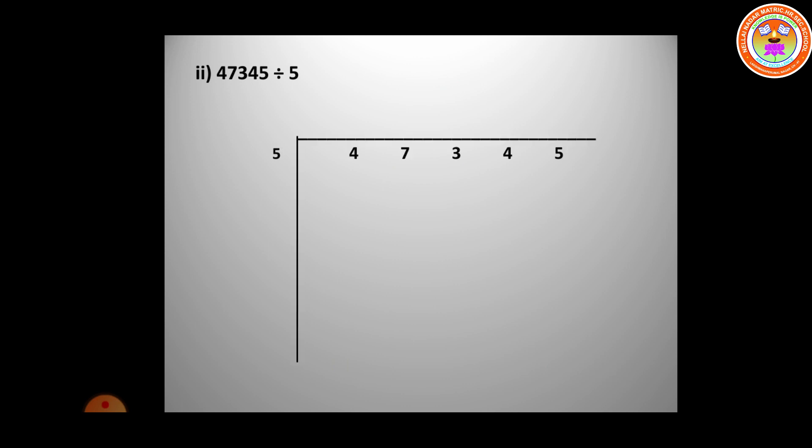The next question is 47,345 divided by 5. The dividend is 47,345 and the divisor is 5. Since 4 is less than 5, take 47 together. In the 5 times table, nine 5's are 45, remainder is 2. Bring the next number down — it becomes 23. Five 4's are 20, remainder is 3.